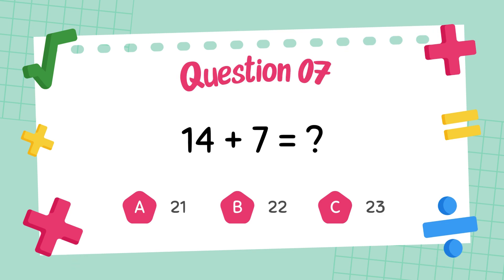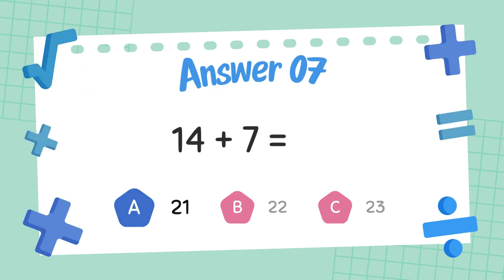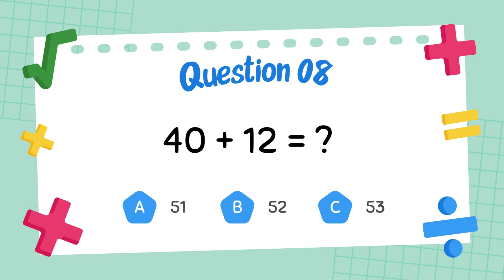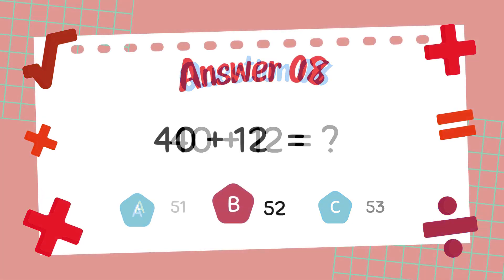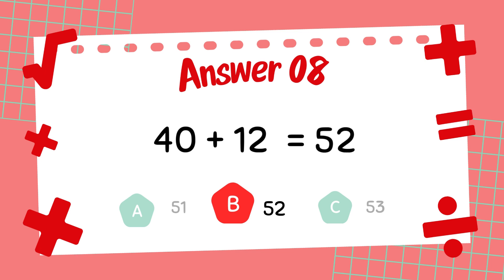What is 14 plus 7? The answer is 21. What is 40 plus 12? The answer is 52.